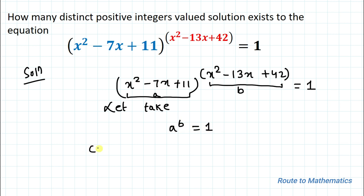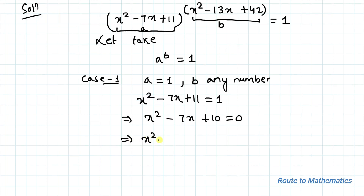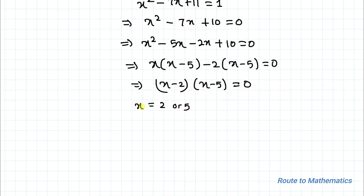Case 1: a = 1, where b can be any number. Setting x² - 7x + 11 = 1 gives x² - 7x + 10 = 0. Using middle term splitting: x² - 5x - 2x + 10 = 0, so x(x - 5) - 2(x - 5) = 0, giving (x - 2)(x - 5) = 0. Therefore x = 2 or x = 5.